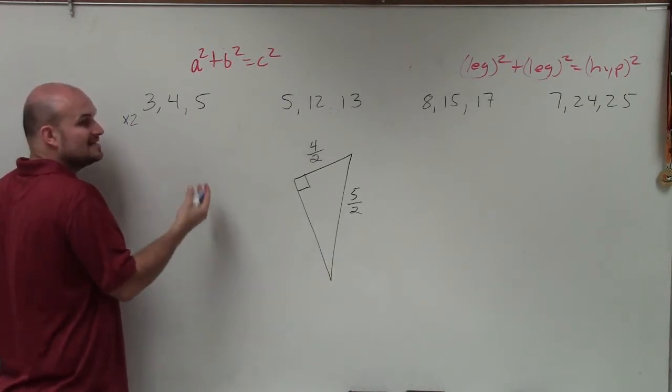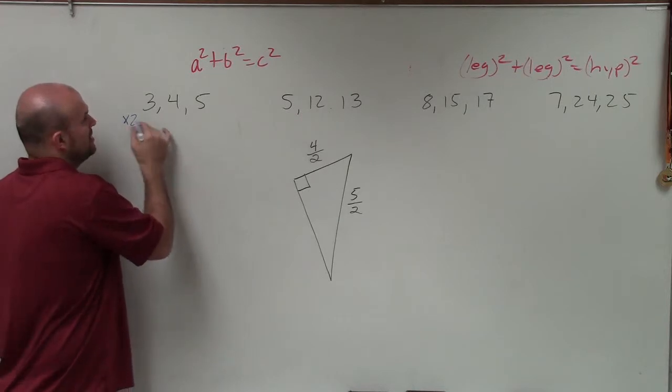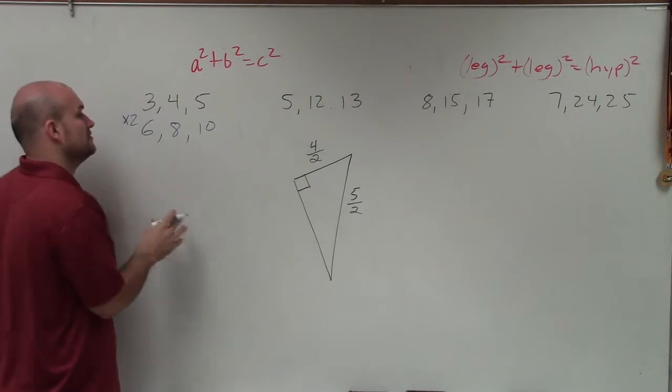So if I multiply by 2, I'd have 6, 8, 10. Guess what? That's another Pythagorean triple.